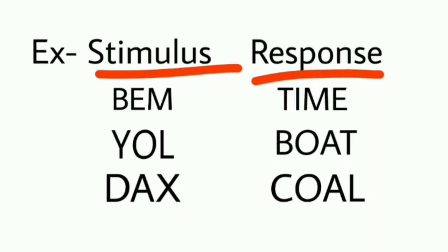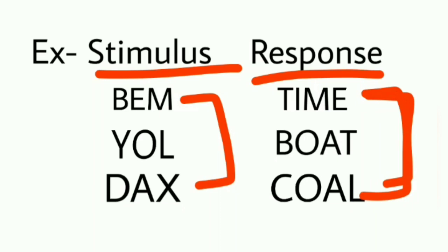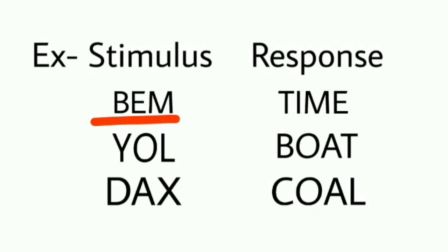Ye learning hoti kaise hai? Pehle learner ko stimulus-response ke jo pairs hote hain woh dikhaye jaate hain, aur saath mein instructions diye jaate hain ki response ko yaad karo, taaki jab stimulus present karo toh response yaad aa jaye. Ek-ek karke stimulus words present kiye jaate hain aur learner sahi response dene ki koshish karta hai; jahan woh bata nahi paata, wahan use correct kar dete hain. Ye trials tab tak continue hote hain jab tak learning ho jaaye. Jaise 'BEM' ek unfamiliar stimulus word hai aur uske saath familiar word 'time' associate kar diya — toh learner ko yaad karwaya jaata hai ki jab BEM bola jaaye toh 'time' bolna hai.